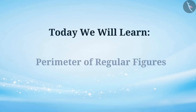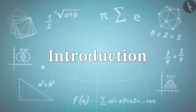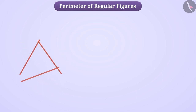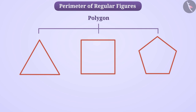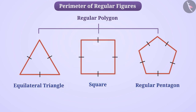Today we will learn perimeter of regular figures. We know that a closed shape made up of three or more line segments is called a polygon. When all the sides of a polygon are of equal measures, then we call such polygons as regular polygons — like square, equilateral triangle, regular pentagon, etc.